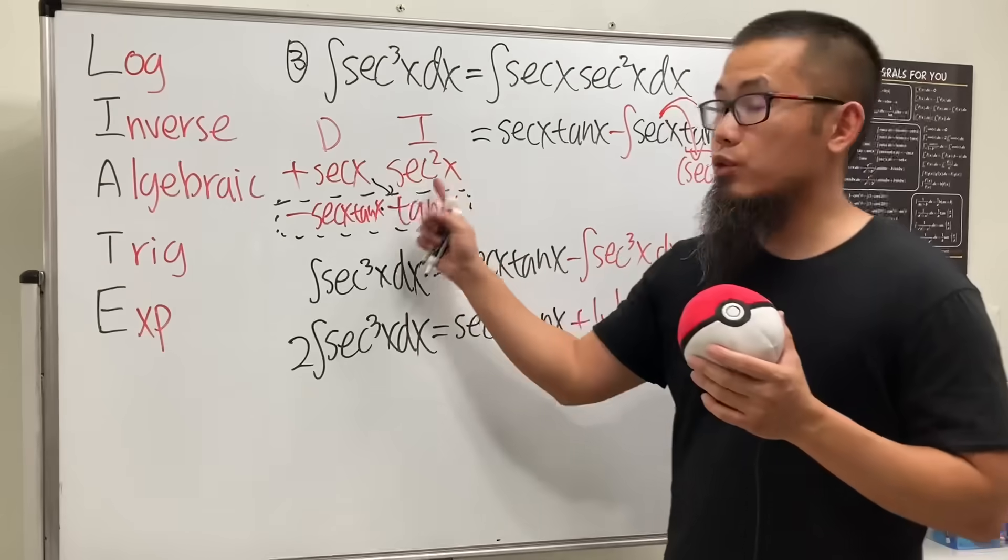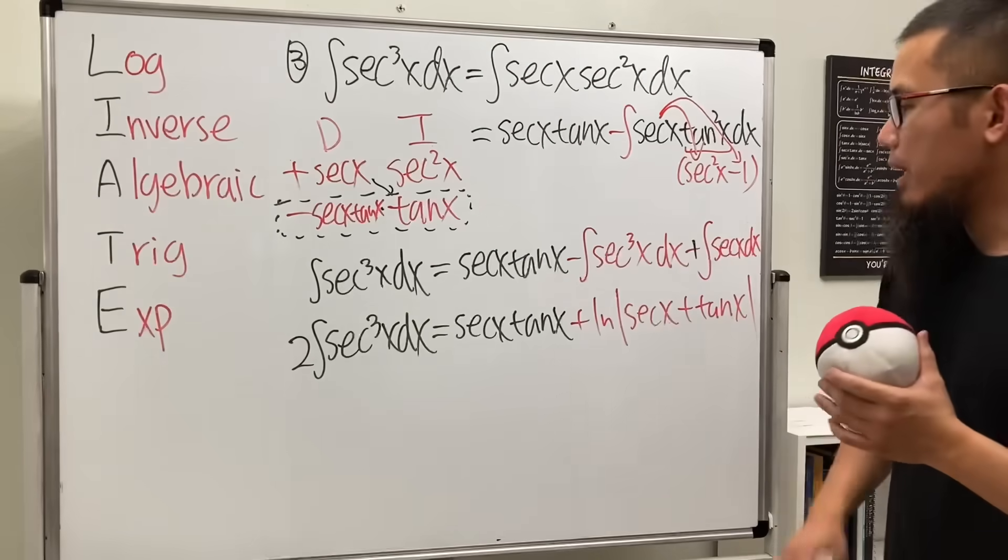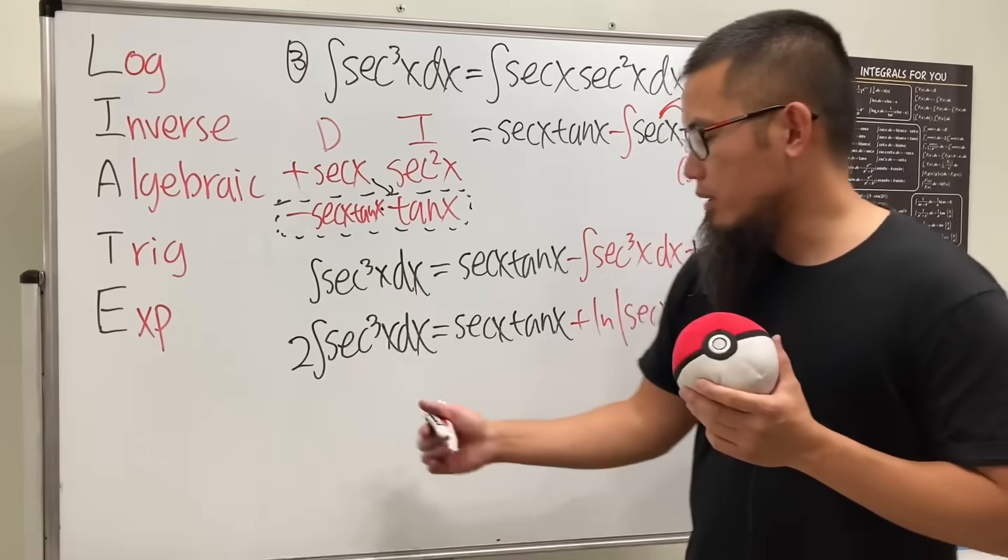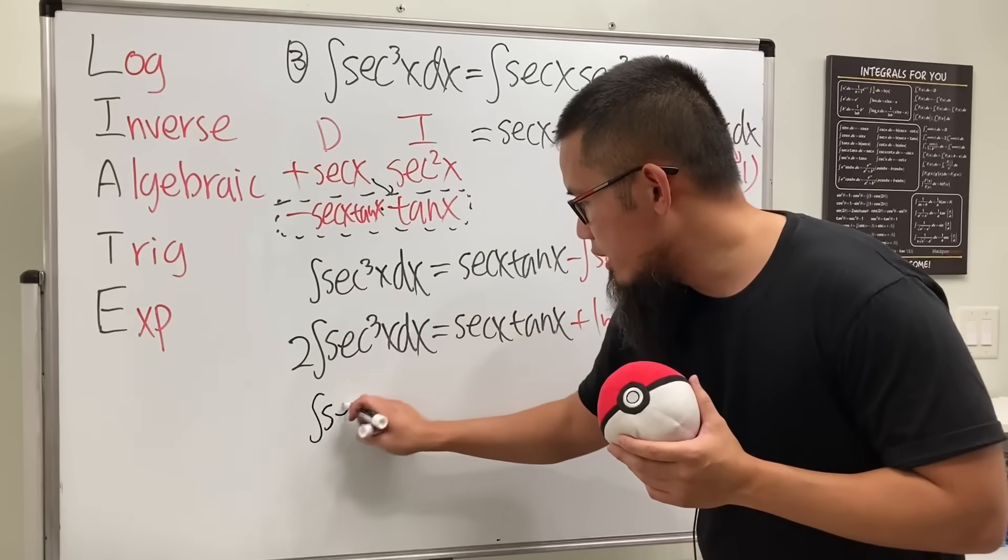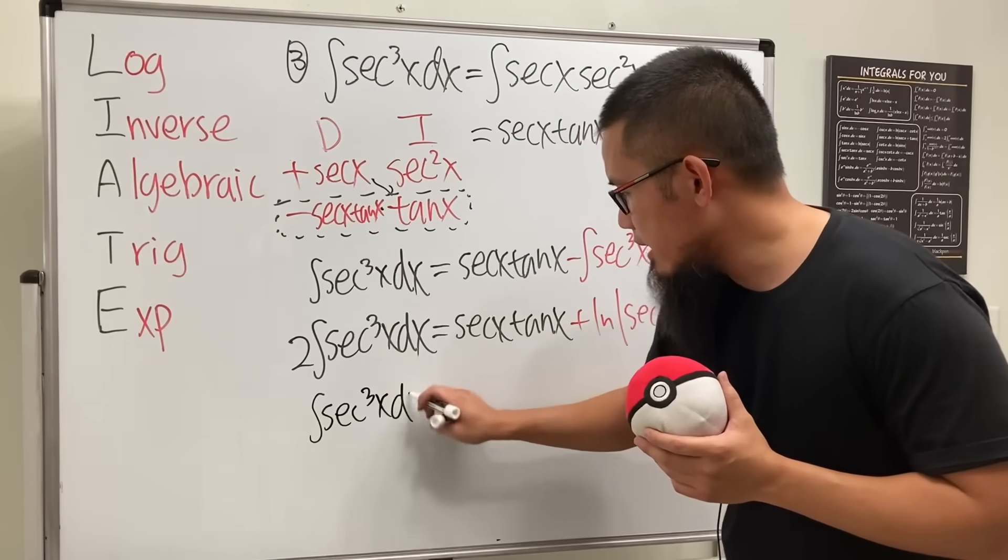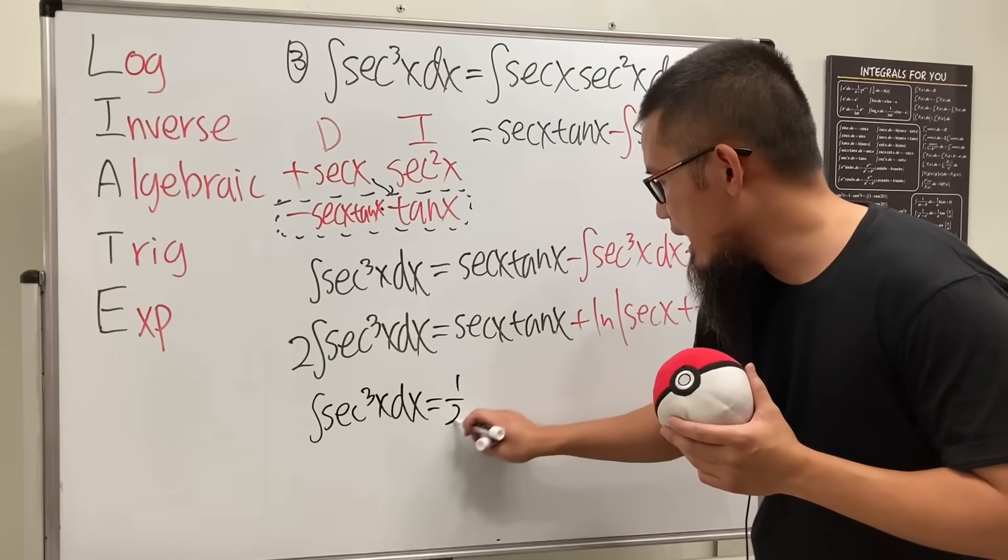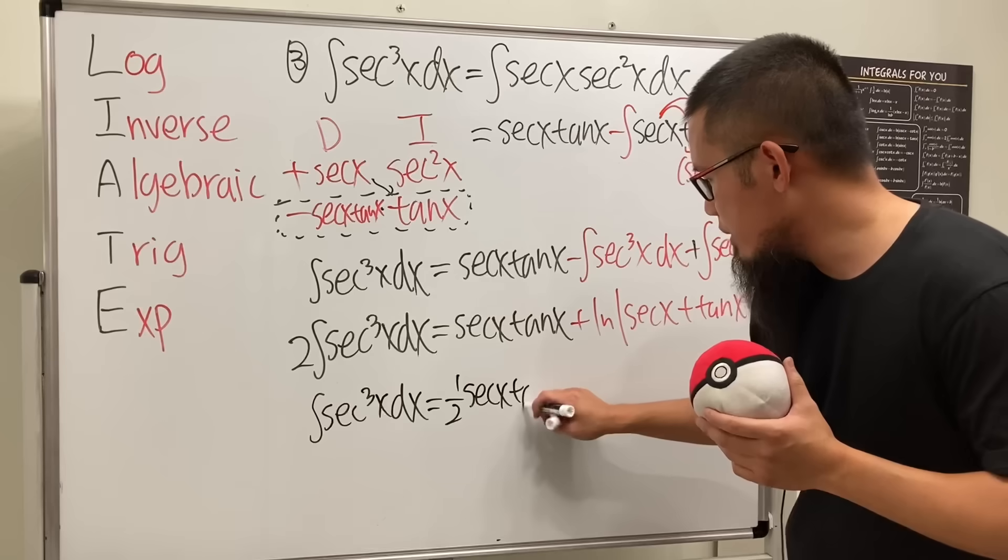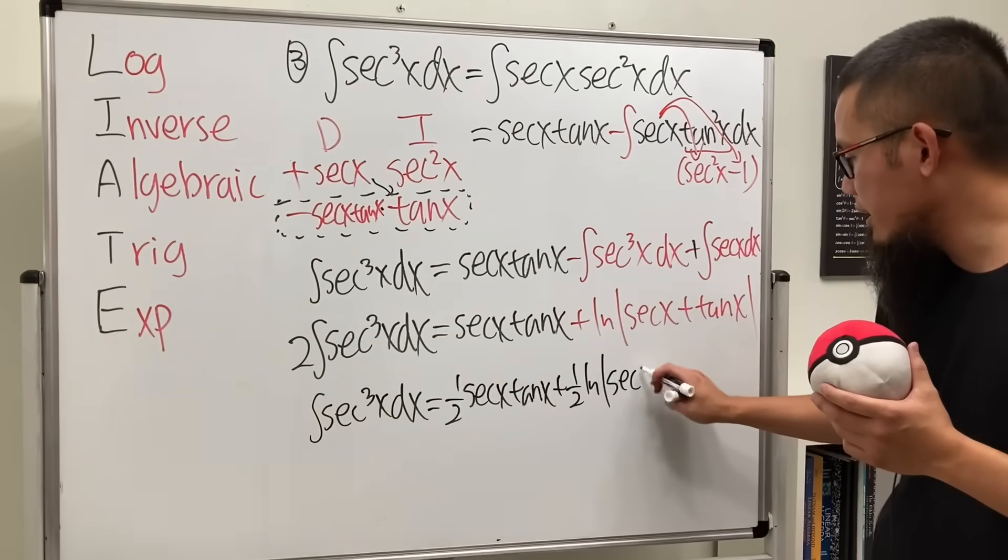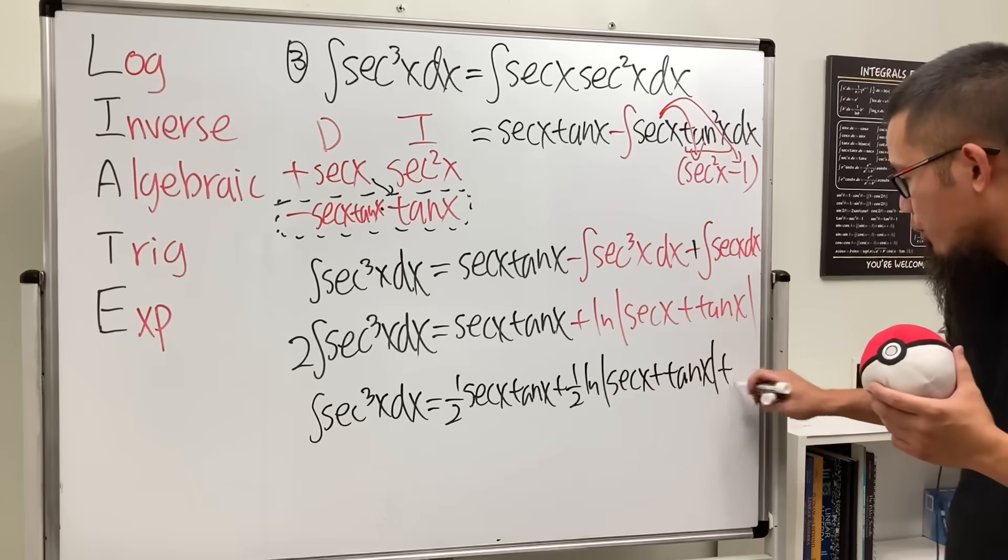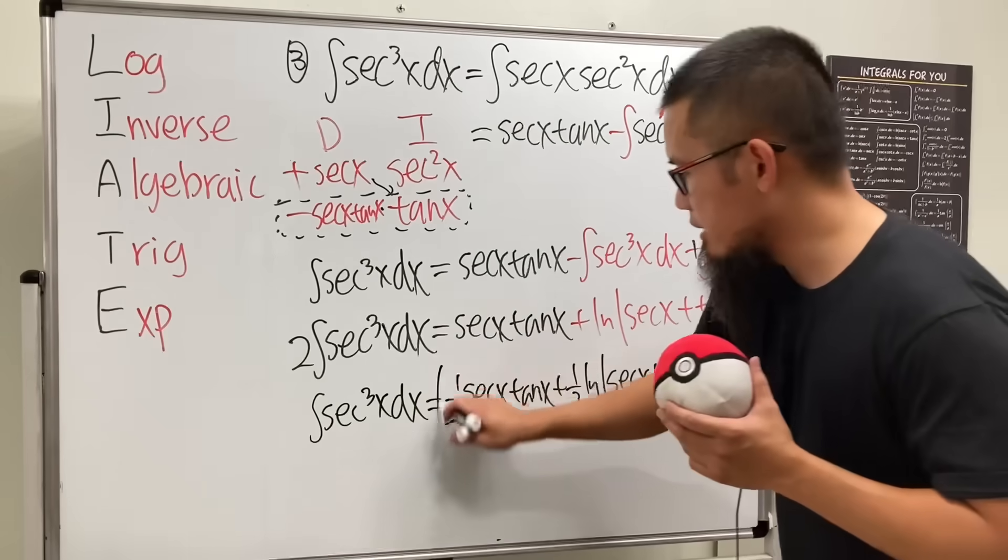But once you multiply the second row, the two things from the second row, that's why, right? Always think about what to choose to be integrated first. But anyway, we are not done yet because we don't want this 2 right here. So divide everybody by 2. Therefore, the integral of secant to the third power x dx is equal to 1 half secant x tangent x plus 1 half ln absolute value of secant x plus tangent x and then of course plus C. We are done.